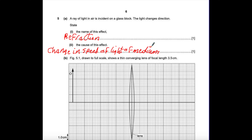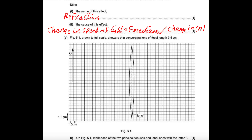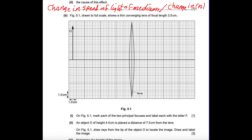We can also say: change in N, which is the refractive index of the medium — change in the refractive index, which is N. Figure 5.1, drawn to full scale, shows a thin converging lens of focal length 3.5 cm. This is a convex lens, which is converging for light rays.